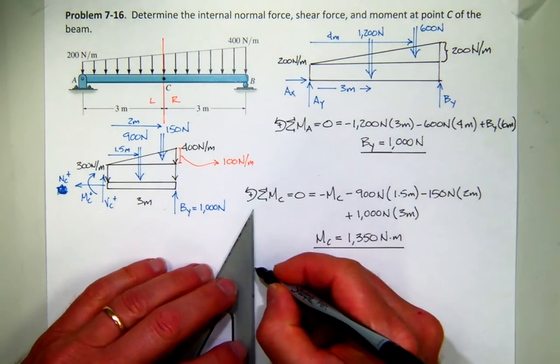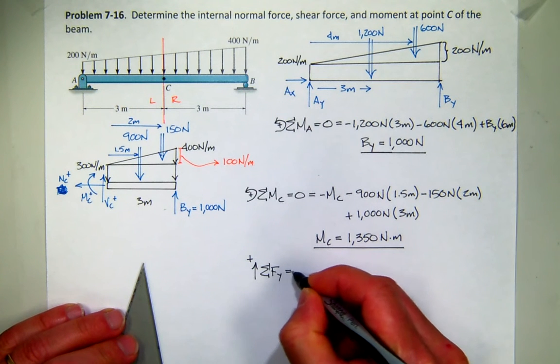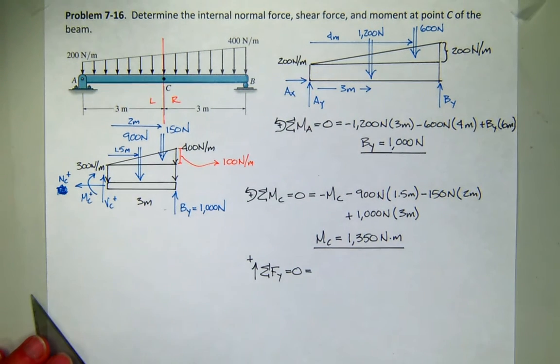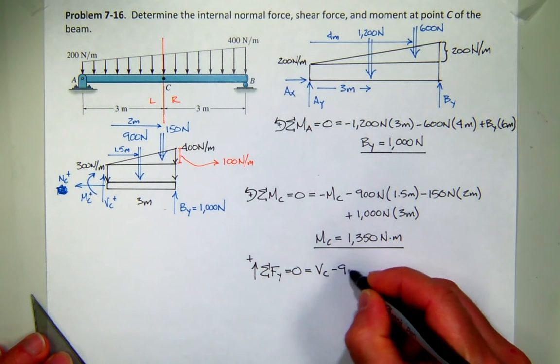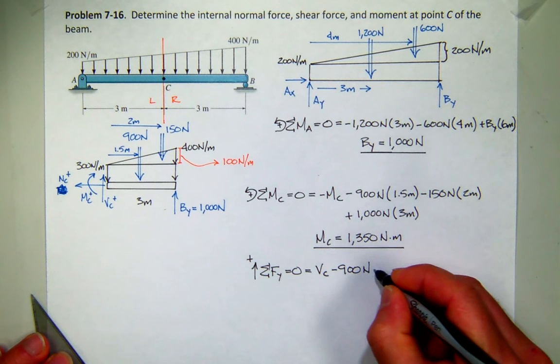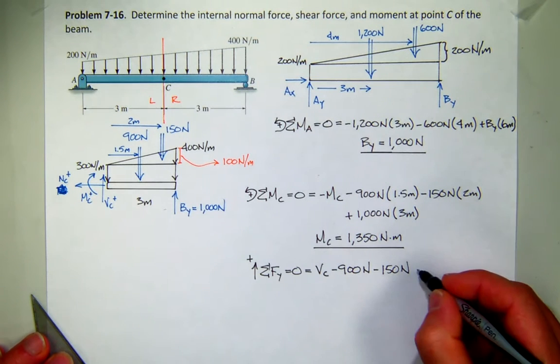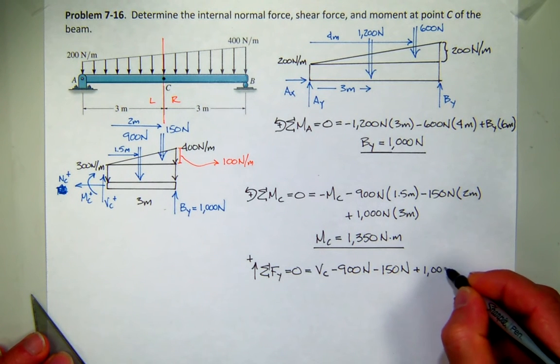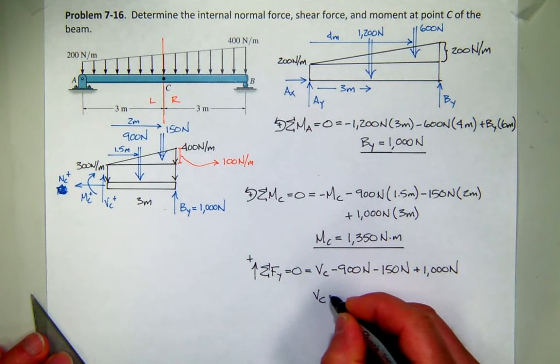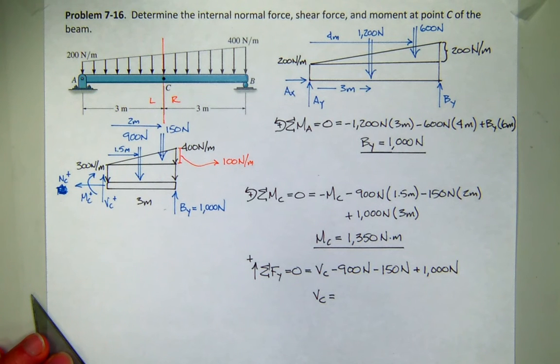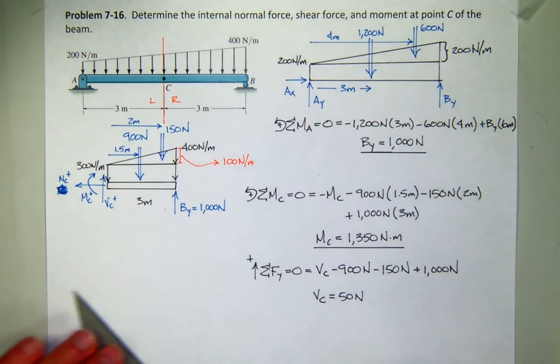So we can sum forces in the y direction. We get the shear. So I have the shear force acting up. I got a bunch of forces acting down here. So I got 900 newtons from the concentrated equivalent force, 150 from that triangular section, and then my reaction of 1,000. So it looks like the shear at C is going to be 50. Looks like it's going to be positive.